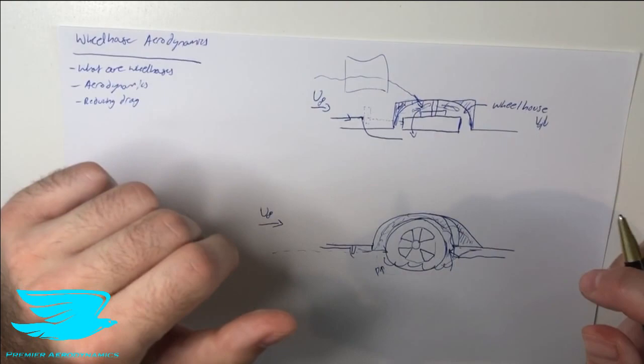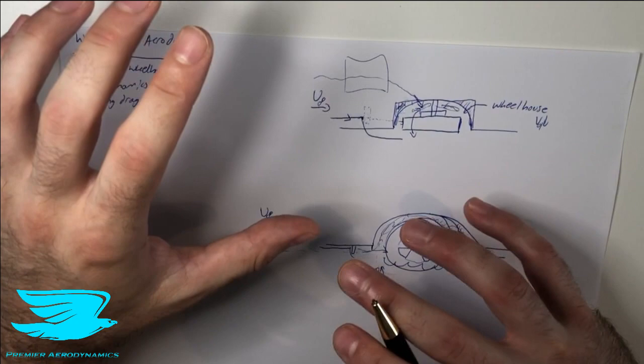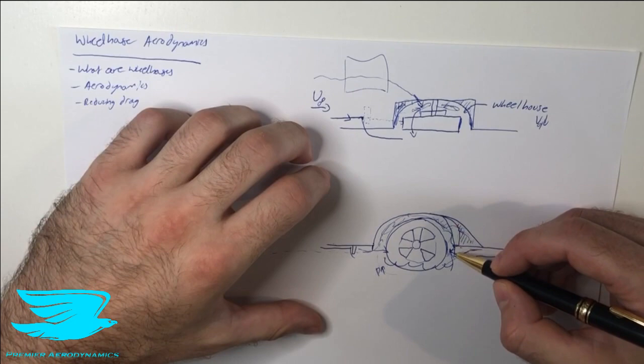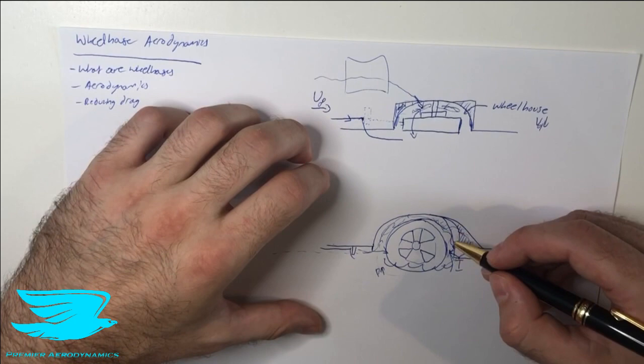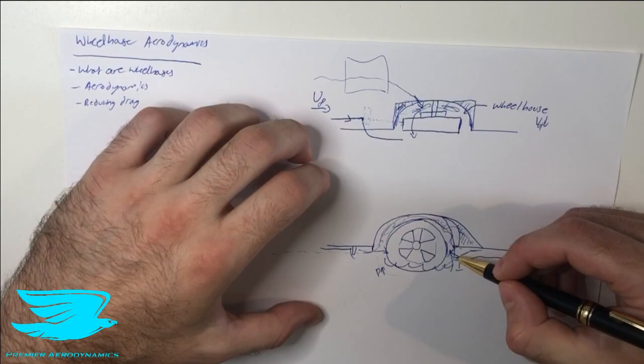That also alleviates some of that low pressure zone that will increase the drag by sucking more flow in. So we actually do want to reduce, we also want to reduce the height of this wheelhouse at the back from the ground to be able to kind of shield the wheel even more. The more we can shield the wheel, the better off we'll be. So that's one caveat that we should be aware of when we're talking about how to reduce the volume of the wheelhouse.